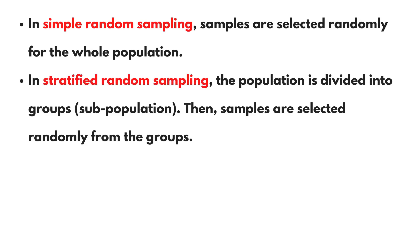In stratified random sampling, the population is divided into groups or subpopulation. Then samples are selected randomly from the groups.